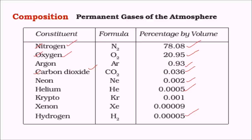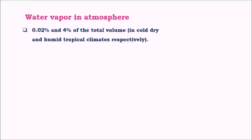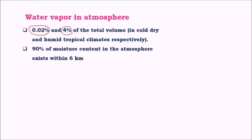Water vapour is another very important component of atmosphere, helping in both the greenhouse effect and the hydrological cycle. The water-holding capacity of air increases with increasing temperature — in the tropics the volume of water vapour is high, whereas near the poles it is only about 0.2%. Most water vapour is present at the bottom layers of the atmosphere, and within 6 km there is about 90% of the moisture; above this, water vapour content is highly negligible.